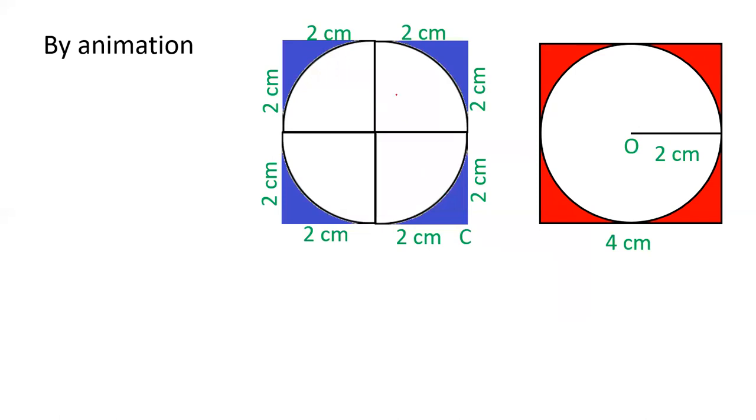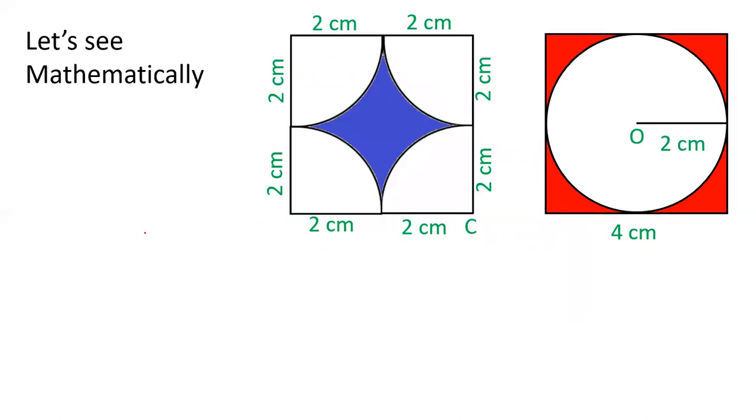This is a square of 4 cm. There is a circle of 2 cm. And therefore, both red area and blue area are same. This we can prove by animation. Let's see how we can check mathematically.